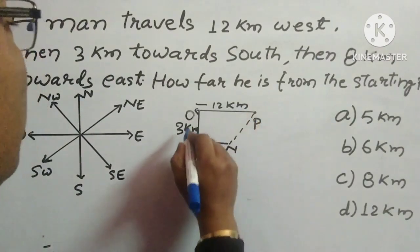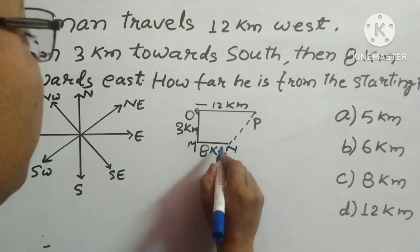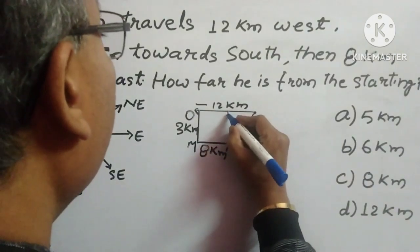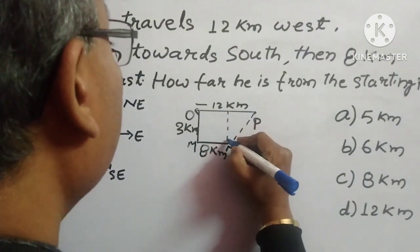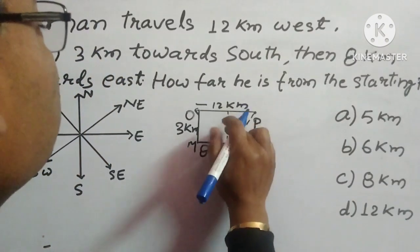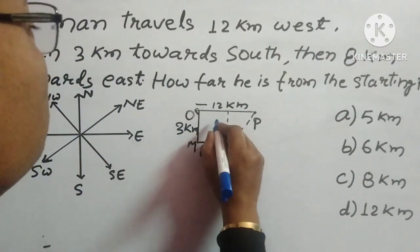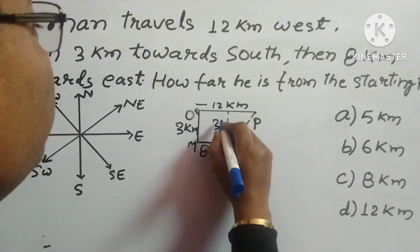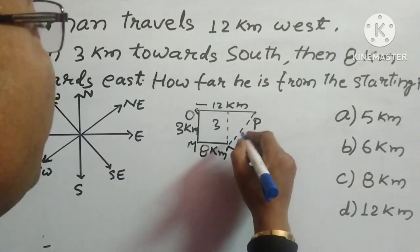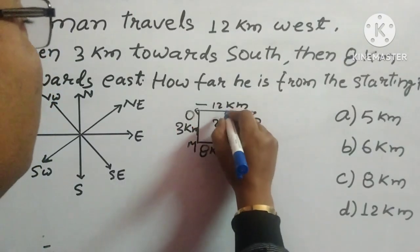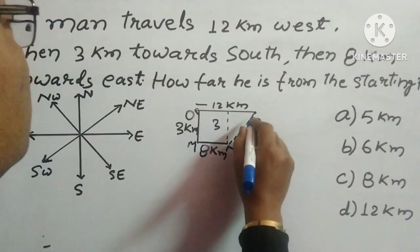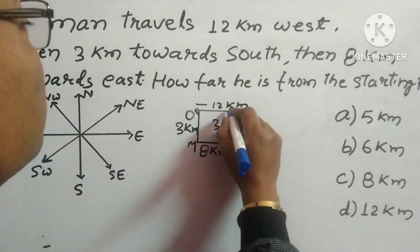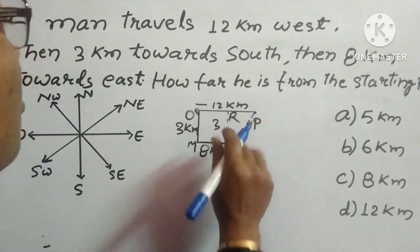So this much is 12, this is 3, this is 8 km. If we draw this like this, so this is also 3. The points are O, P, M, N. Suppose this point is R.